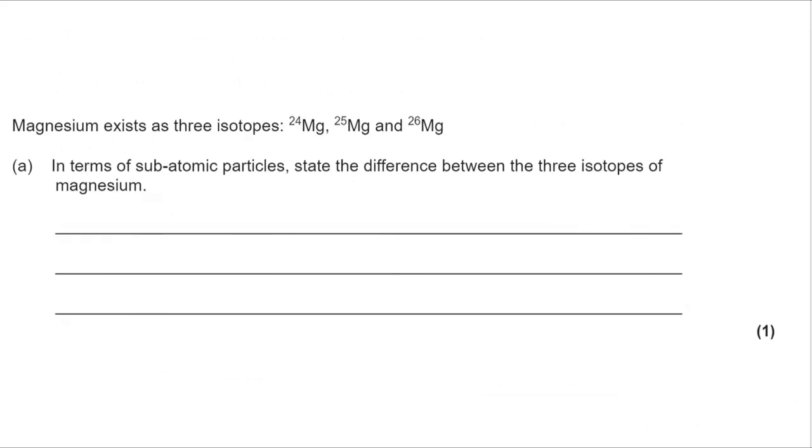Okay, so we'll take a look at part A to begin with and we've got subatomic particles, three different isotopes of magnesium with mass numbers of 24, 25, and 26 respectively, and we want to know what the difference between the three isotopes is.